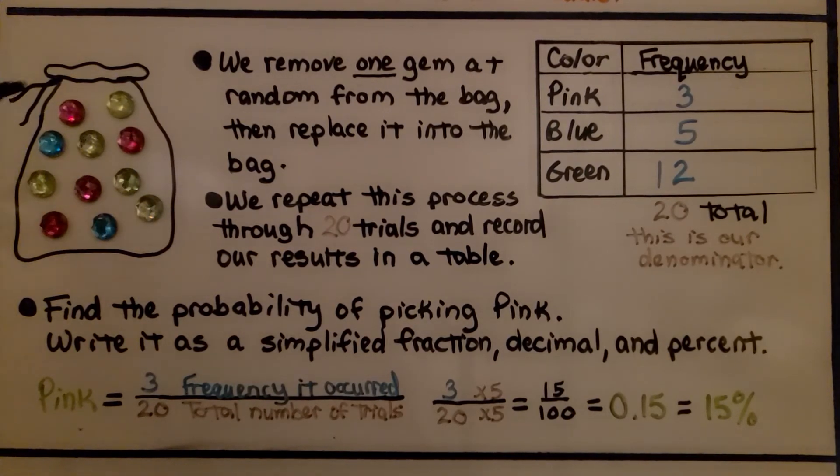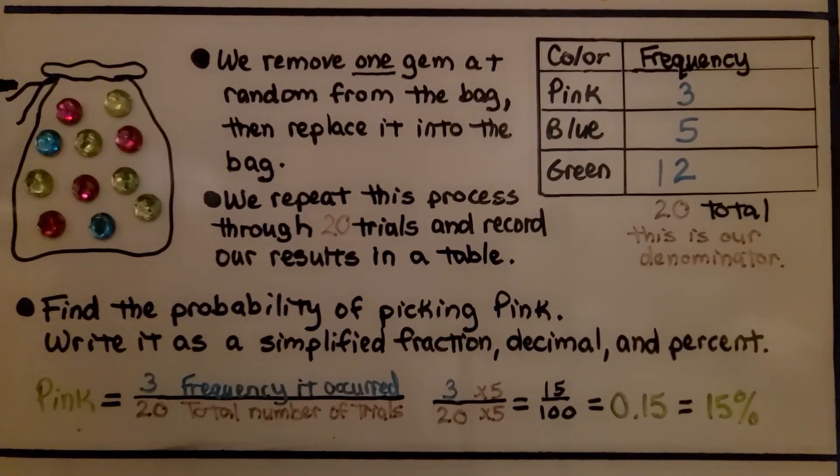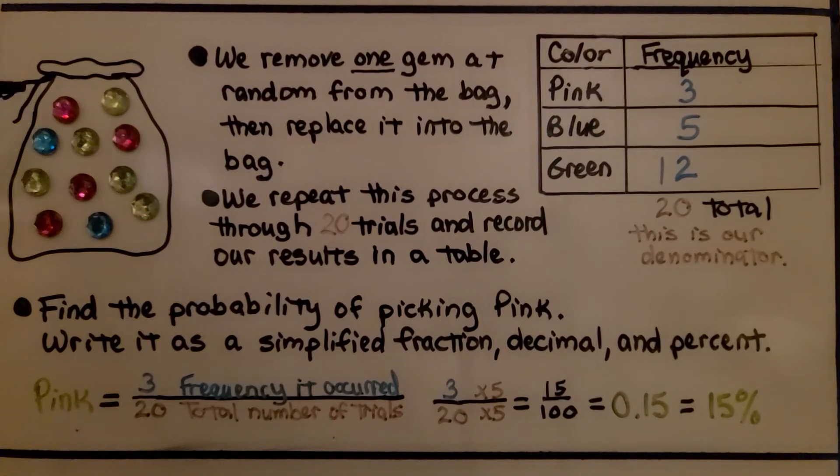So here we've got a bag of colorful gems, and we can see there are two blue ones, and there's four pink ones, and there's five green ones. We remove one gem at random from the bag, and then replace it into the bag.